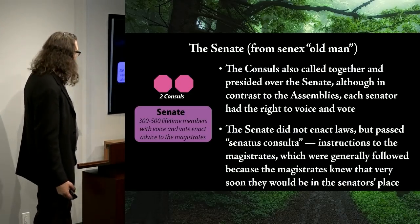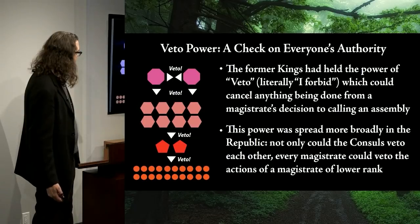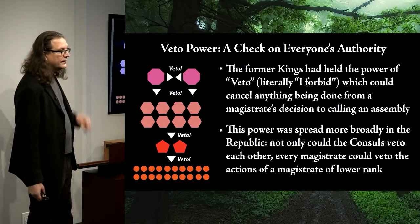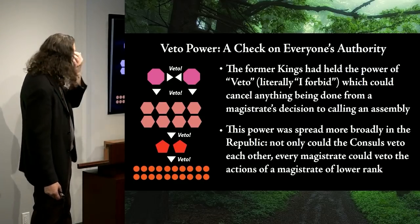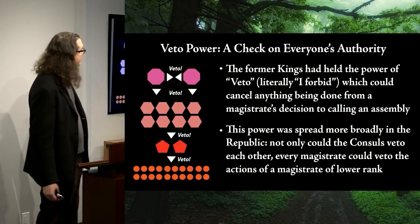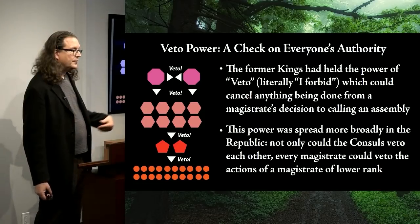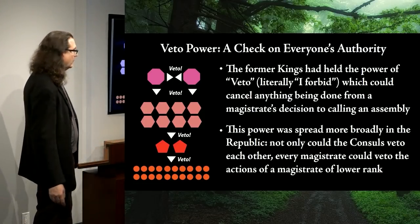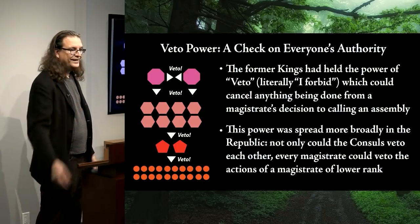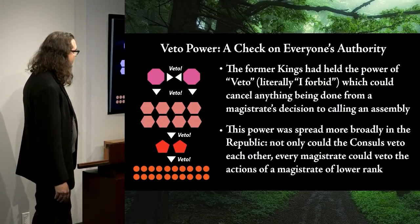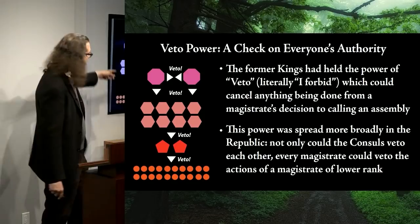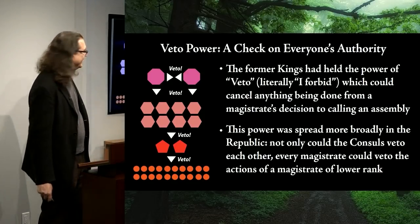There's also the ultimate check on more or less everybody's authority in the Roman Republic: the veto. It's Latin for 'I forbid.' It could cancel anything — a magistrate's decision, the calling of an assembly. The power is spread broadly: consuls can veto each other and anyone lower than them; those lower can veto anyone lower still. As a result, the system is more likely to err on the side of not doing anything. It is inherently a conservative system that resists change.